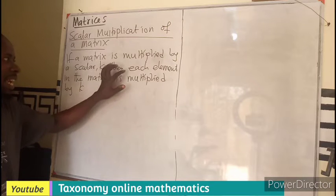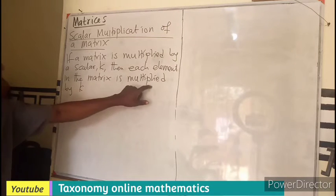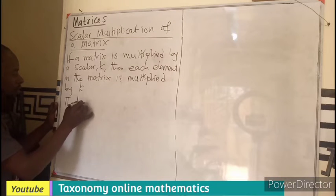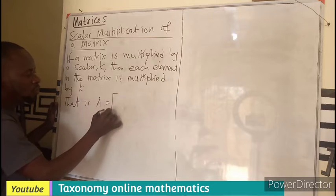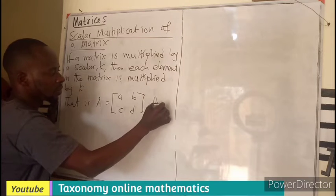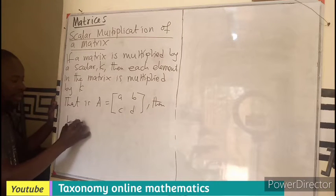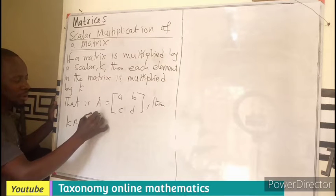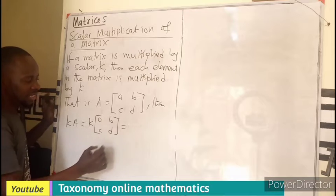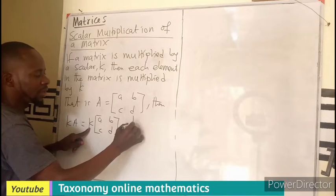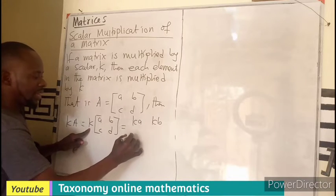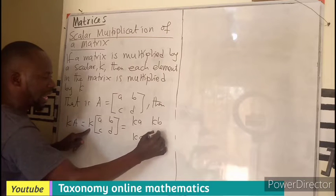That is, if I have matrix A to be [a, b; c, d], then if I am multiplying kA, it should be k multiplying each of the elements within this. k times a gives me ka, k times b gives kb, k times c gives kc, then k times d gives kd.